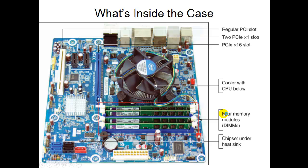Looking down here, we have four memory modules — there's one in each of these DIMM slots. We'll go over why they're called DIMMs later on. This is our random access memory, our RAM. This is one of those sources of information when it comes to an upgrade — one of the easiest upgrades to do is changing out or upgrading your RAM, but we'll go into that at another time.